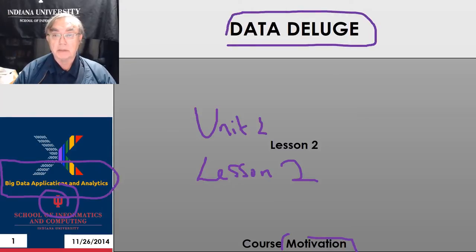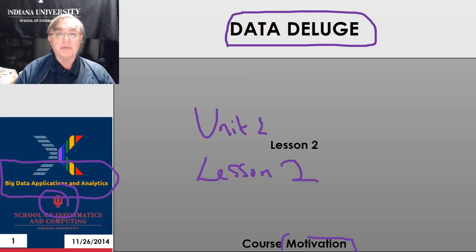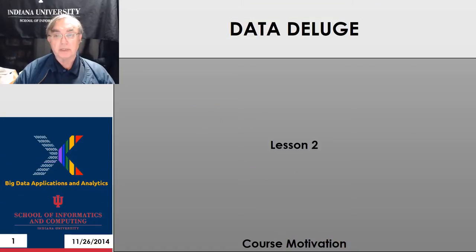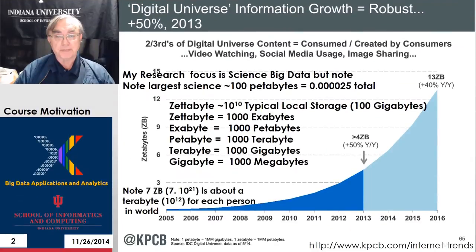We're going to discuss the data deluge in general, starting with the 13 zettabytes we find at the beginning of 2016, increasing some 40% year on year. We will also discuss data across various fields to show how universal the data deluge is.